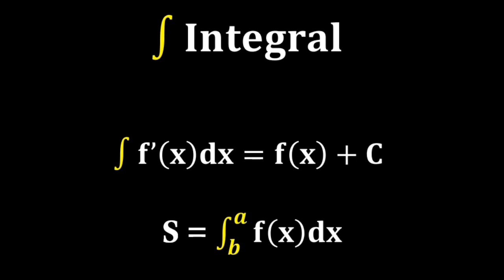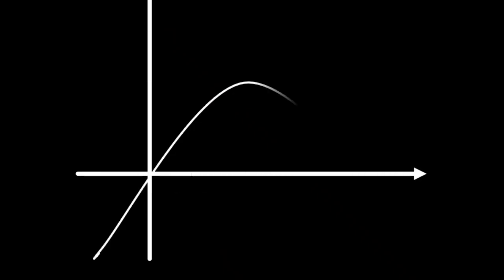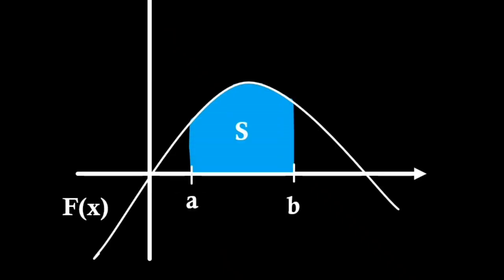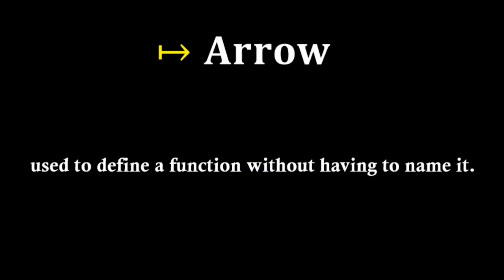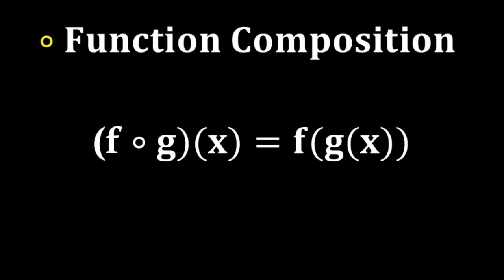Integral denotes an antiderivative, which is basically the opposite of the derivative. With subscript and superscript, it denotes a definite integral, which represents the area under a curve or the accumulation of a quantity over an interval. Arrow is sometimes used to define a function without having to name it. Function composition is an operation that combines two functions.